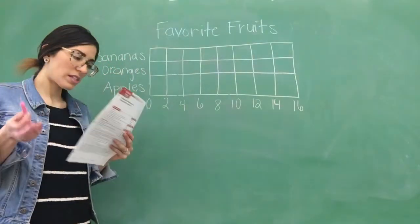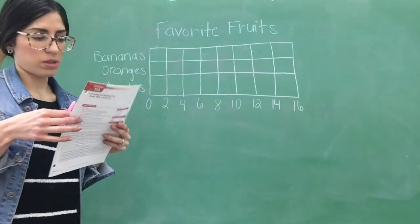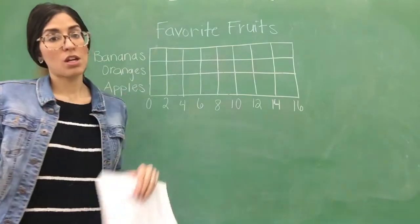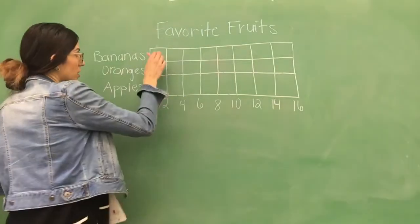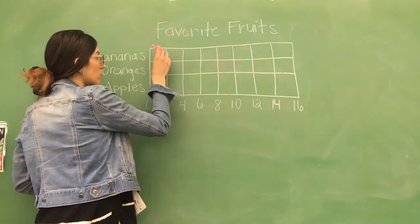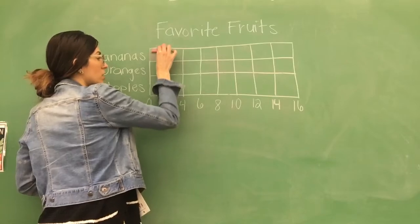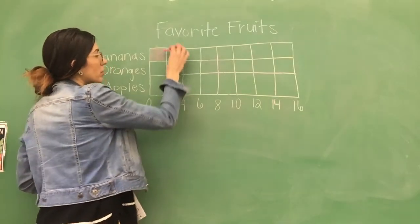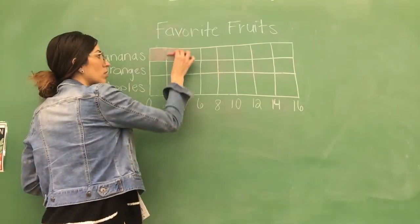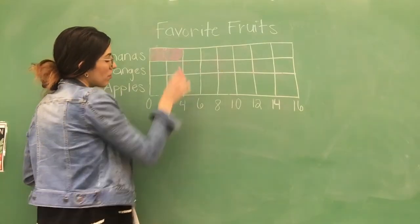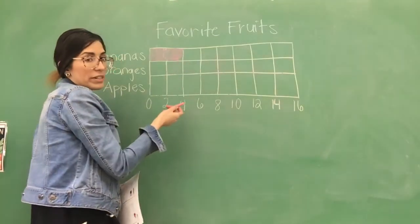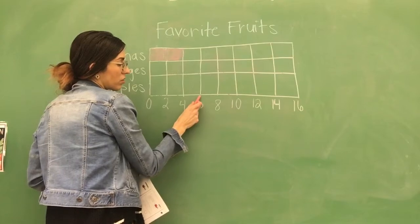Now, let's say there were six students who loved bananas. So, we would shade it. Start at the zero, right? And we would shade this. So, this is two. So, we need to go a little bit more. Okay, so this is four. So, again, we need to go all the way to the six. So, six is here.